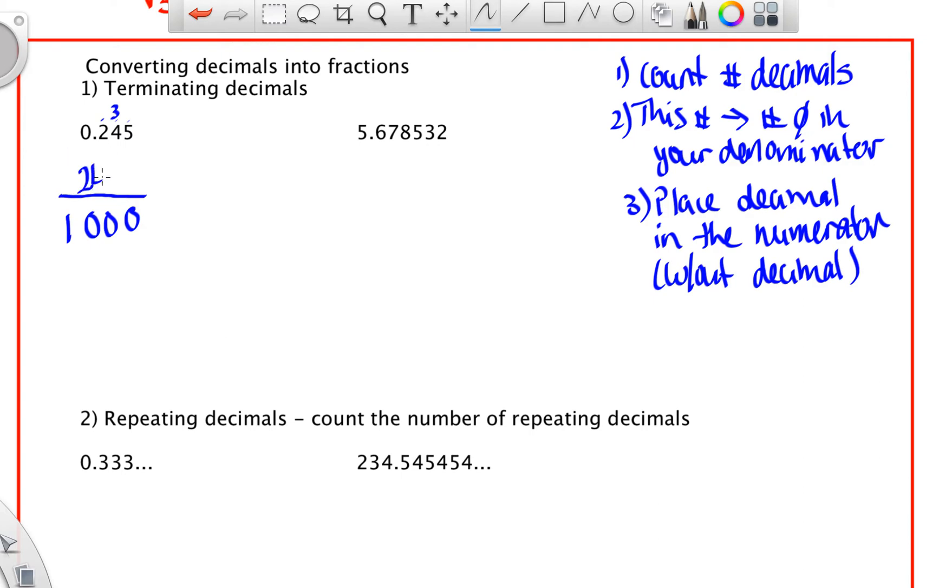So two, four, five. So 245 divided by 1,000 would give you 0.245. You would have to reduce this if it was on a test or a quiz. But for time's sake, we're going to move on.